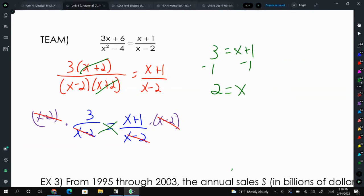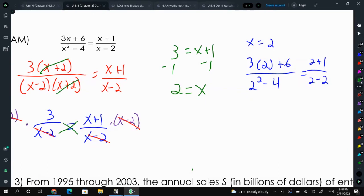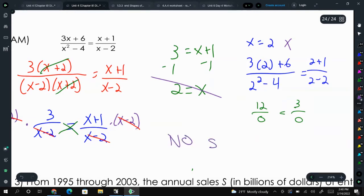So then we've got to plug in 2 and see if it works. Now, some of you might have already seen that this is not going to work, because we're going to get 0 in one, or actually both denominators. But if you get 0 in just one of them, then the solution does not work. 2 squared is 4, so it doesn't matter what we get on top. It doesn't matter that we get 12 over 0 and 3 over 0. Because we have 0s in the denominator, this does not work. So there are no solutions.